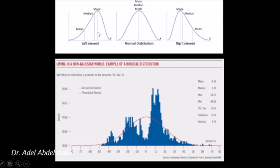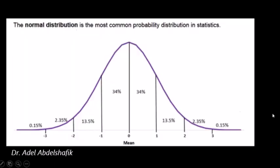If we ask what are the chances of meeting people taller than 180, we calculate people in that zone and divide by the total. A frequency distribution curve can be a normal distribution — a bell shape — or skewed to the left, skewed to the right, or even a bimodal distribution.